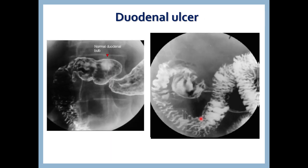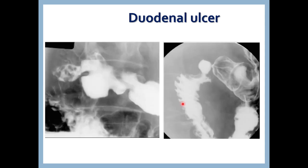Another duodenal pathology is duodenal ulcer. The normal duodenal cap is shown for comparison. In duodenal ulcer, there is a collection of barium in the region of the duodenum. Another picture of duodenal ulcer is also shown, though it is quite difficult to appear in the exam.